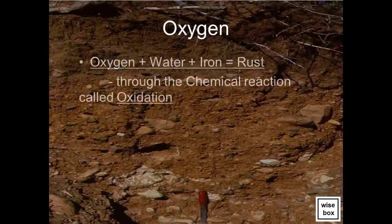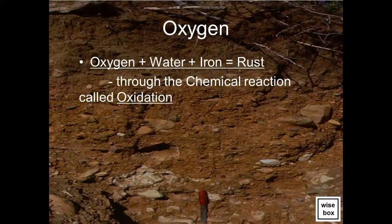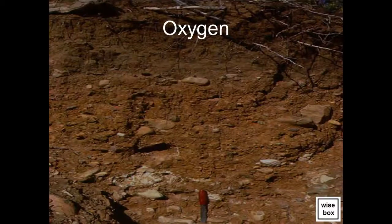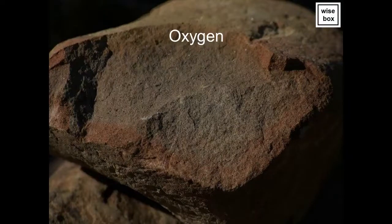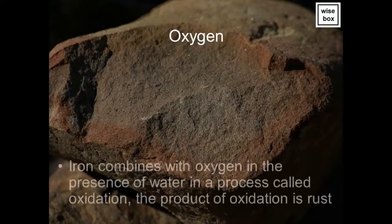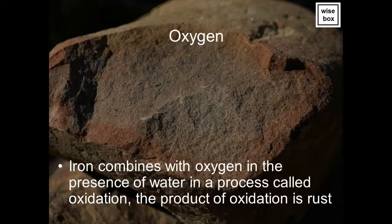Oxygen plus water plus iron equals rust — this chemical reaction is called oxidation. Upon oxidation, rock will become crumbly, soft, and appear reddish-brown in color. Iron combines with oxygen in the presence of water in a process called oxidation; the product of oxidation is rust.